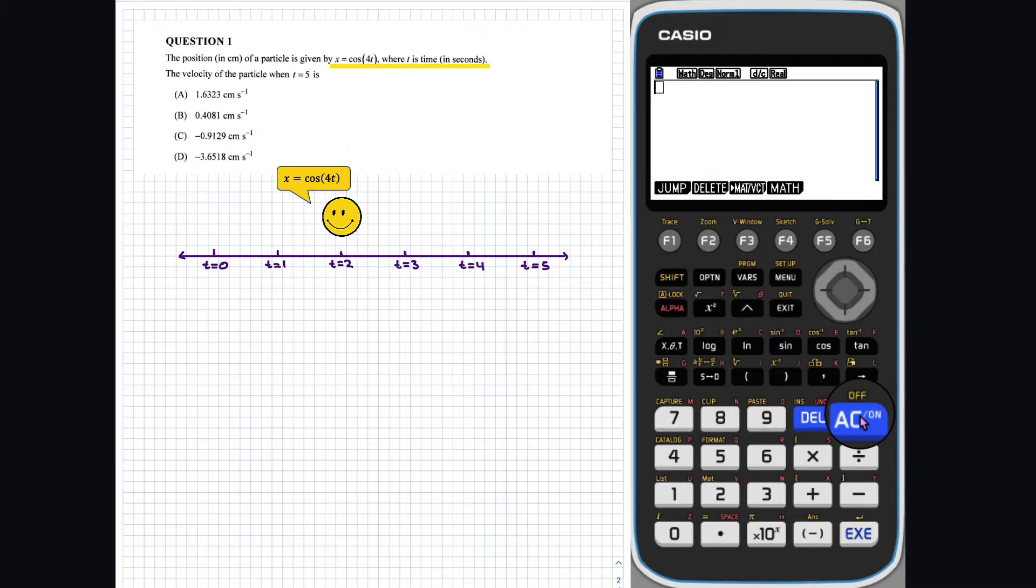To determine the velocity of the particle at t equals 5, we can calculate it by hand by differentiating with respect to t. To find the particle's velocity at t equals 5, we need to evaluate this expression for t equals 5.